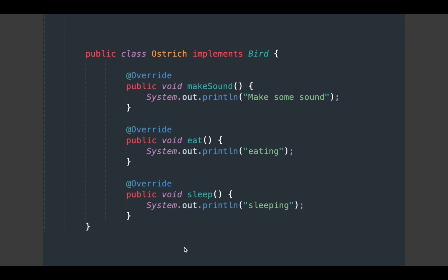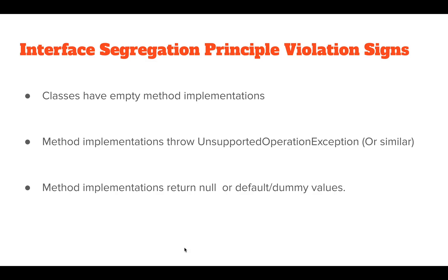Let's discuss a few points about when the Interface Segregation Principle is violated. It's violated when classes have empty method implementations, when method implementations throw unsupported operation exceptions or similar exceptions, and when method implementations return null, default, or dummy values. Now that we've gone through the theory and seen one example, let's open the editor and code one more example.